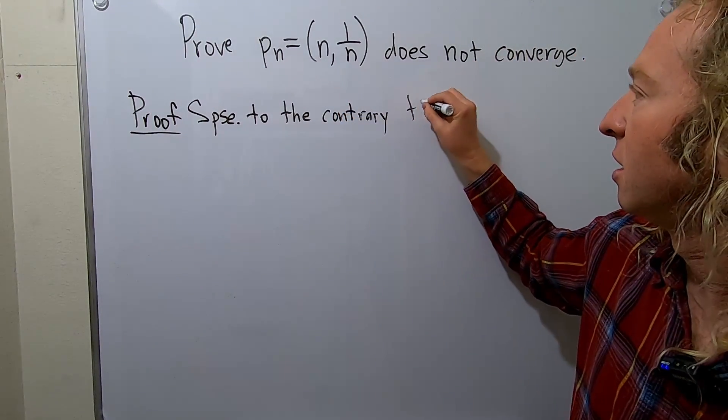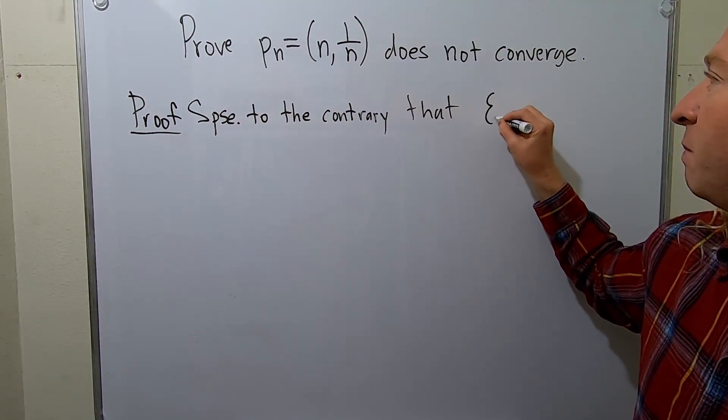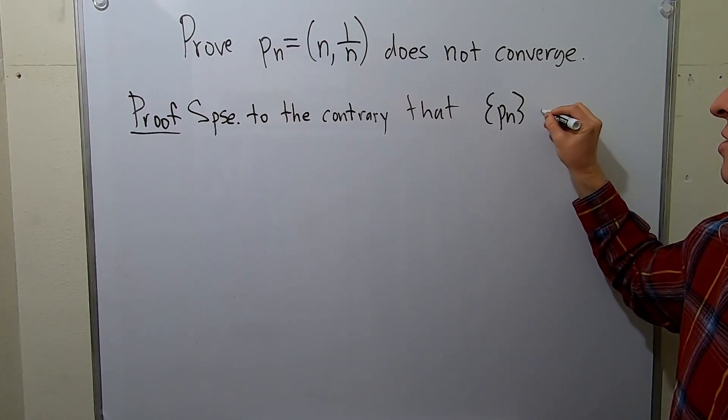So suppose, to the contrary, that p sub n does converge.